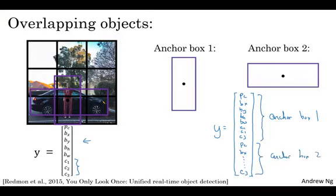So because the shape of the pedestrian is more similar to the shape of anchor box one than anchor box two, you can use these eight numbers to encode that PC is one. Yes, there is a pedestrian, use this to encode the bounding box around the pedestrian, and then use these to encode that that object is a pedestrian.